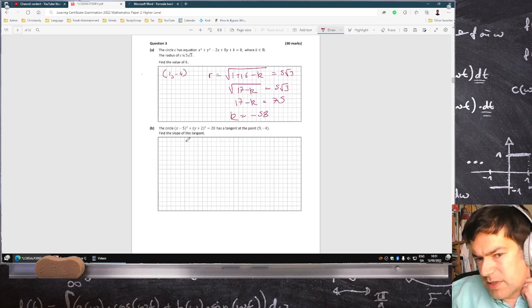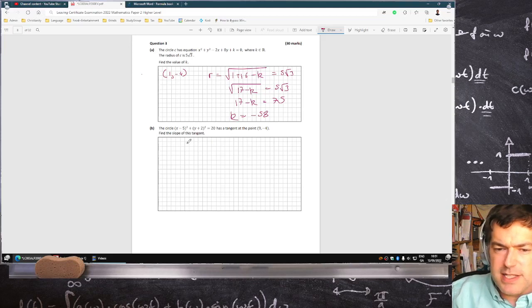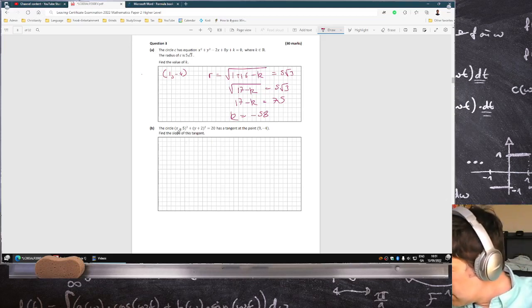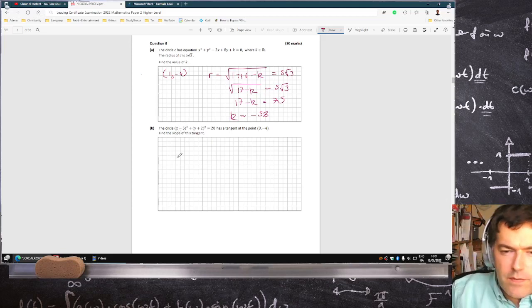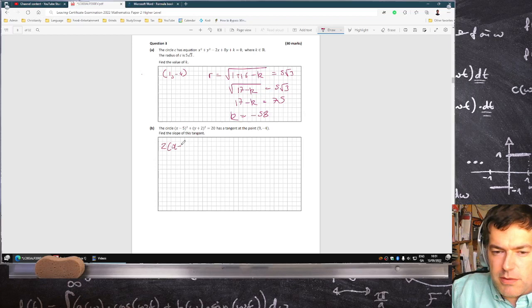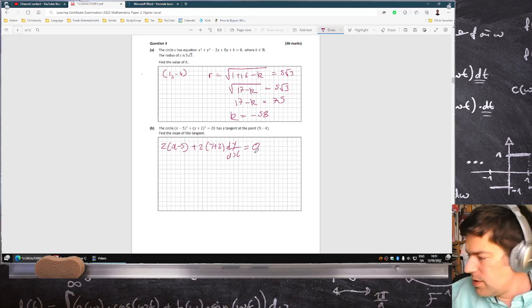Find the slope of the tangent. You could use implicit derivatives, so differentiating implicitly. Bring down the power, reduce the power by 1, and multiply by the inside derivative. Bring down the power, reduce the power by 1, multiply by the inside derivative. Equals the derivative of 20, which is 0.